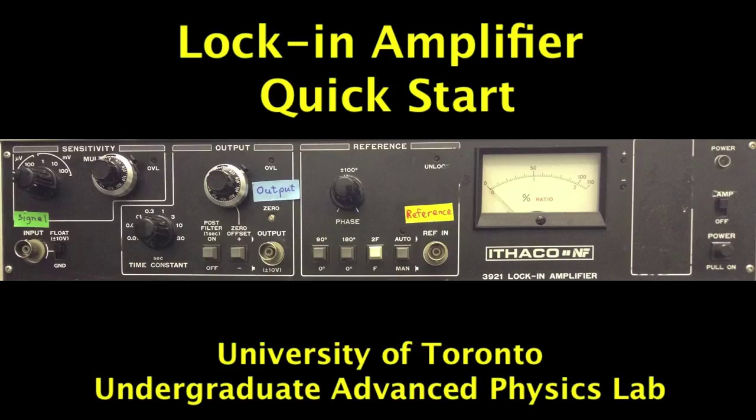A lock-in amplifier is a sensitive AC voltmeter that measures the amplitude and phase of the Fourier component of an input signal relative to a reference sinusoidal signal. It can take tiny signals out of noise and make measurements that are otherwise almost impossible to do. It does this by multiplying together the signal and reference voltages and then averaging the result. The analog or digital electronics needed to do this are complex, but the basic underlying math is easy to understand.